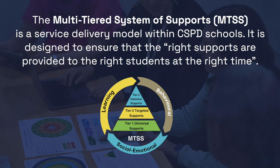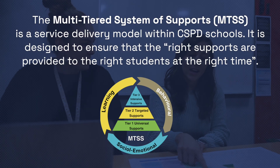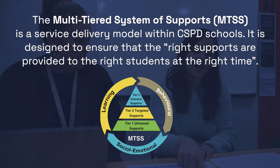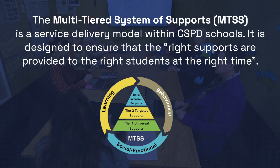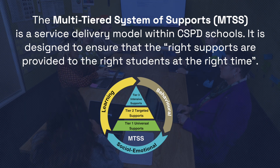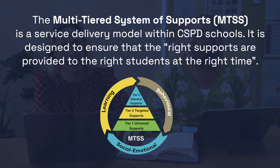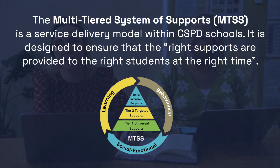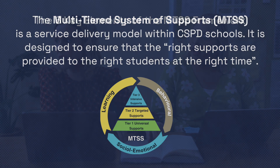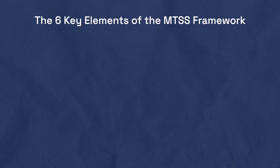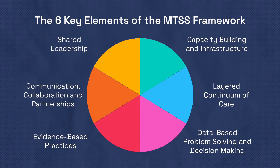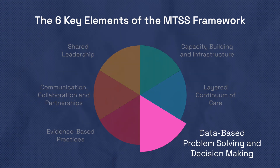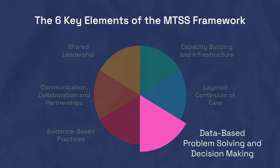The multi-tiered system of supports is a service delivery model within CSPD schools. It is designed to ensure that the right supports are provided to the right students at the right time. There are six key elements of the MTSS. In this video we'll be focusing on data-based problem solving and decision making.